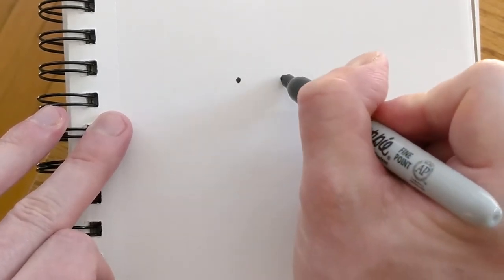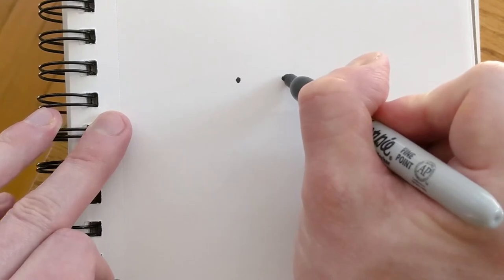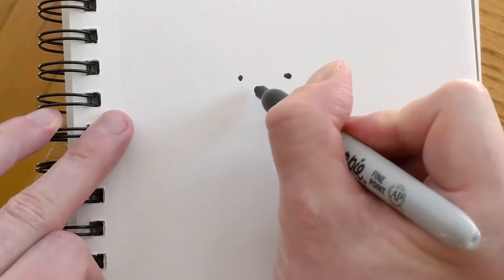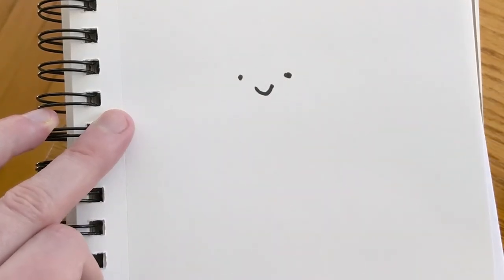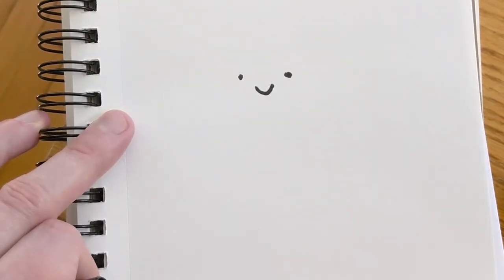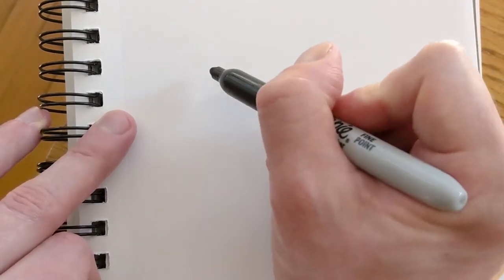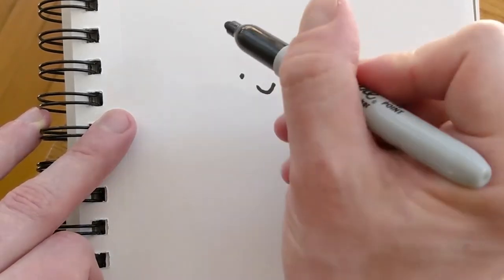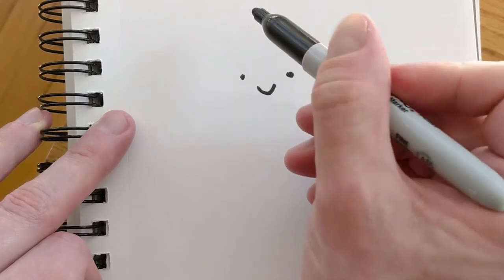To draw Meatloaf, I draw his little dot eyes and I draw them pretty far apart. He has a little smile in between those two dot eyes. And this is the fun part of drawing Meatloaf that I love. To kind of show his loafy shape, I draw four curves along the top of his head.